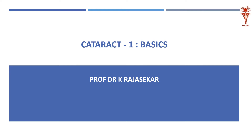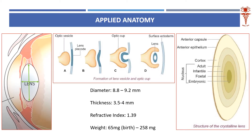Cataract per se means any opacity of the lens — either the substance of the lens or the capsule of the lens. That is the definition of cataract. Cataract literally means a waterfall; it's as if seeing through a waterfall — that is why it's called cataract.